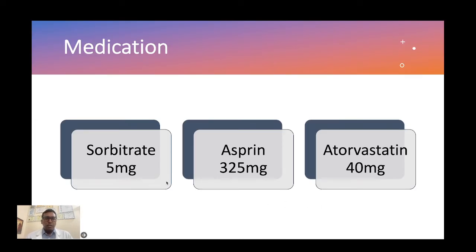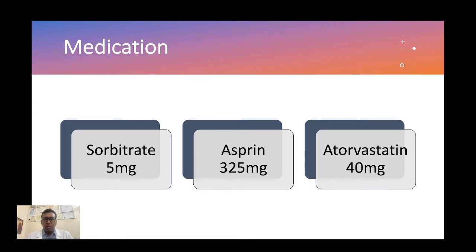These are three medicines that if available at home will help a lot for a heart attack patient: sorbitrate, aspirin, and atorvastatin or rosuvastatin. You can give up to five milligrams of sorbitrate tablets sublingually, up to three tablets. It may subside the pain, though the patient may also get a headache or palpitation. Aspirin is a blood thinner — dispirin 325 mg can be given as a loading dose and helps with the pain as well as initial treatment.